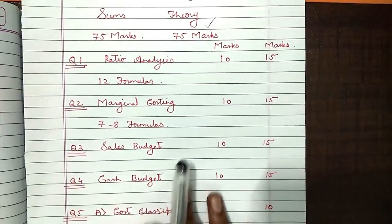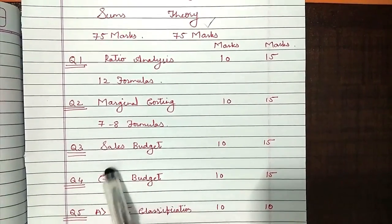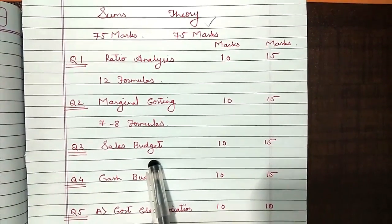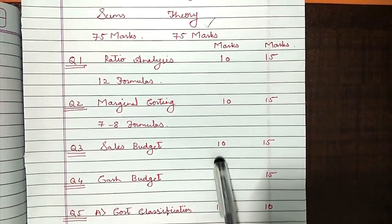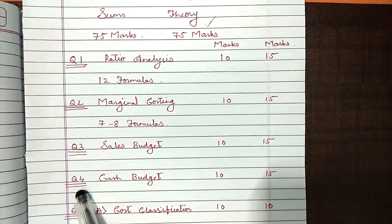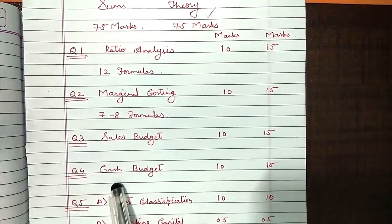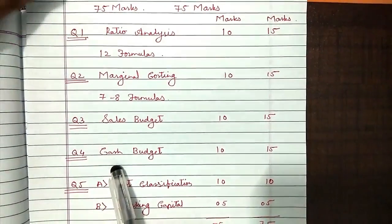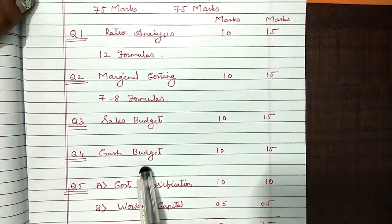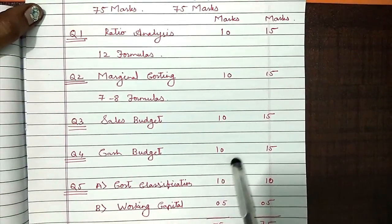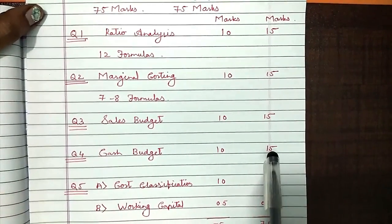The next question will always be from the sales budget. Sales budget has only one format — you do simple plus and minus again, and you can score a minimum 10 marks and a maximum 15 marks. Next is the cash budget, which is also the most easy chapter in financial management. It has only 3 lines of format, and with that you can easily score a minimum 10 marks and a maximum 15 marks.